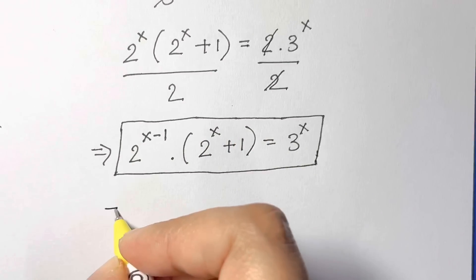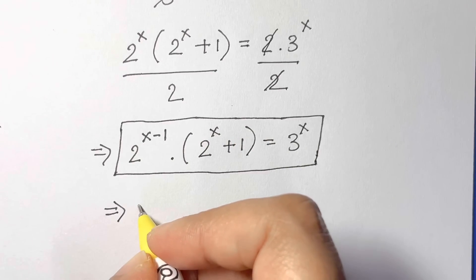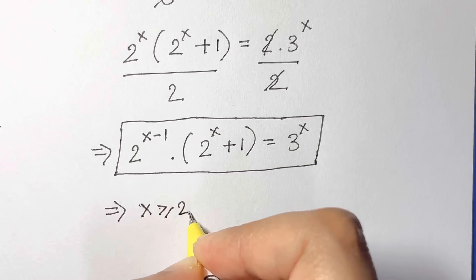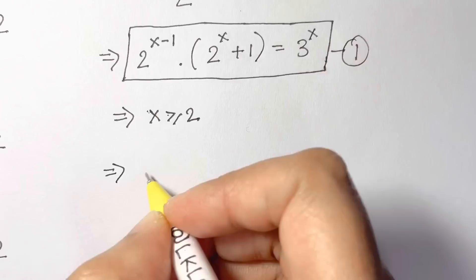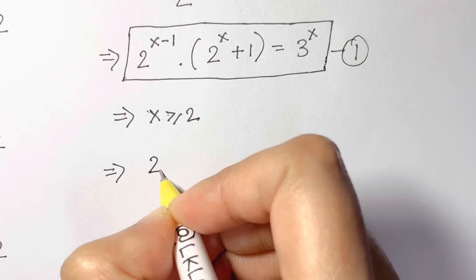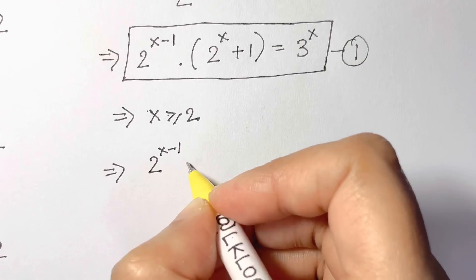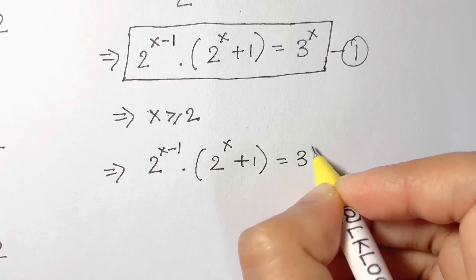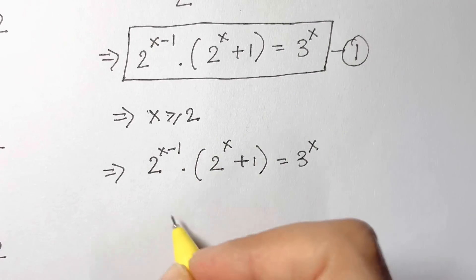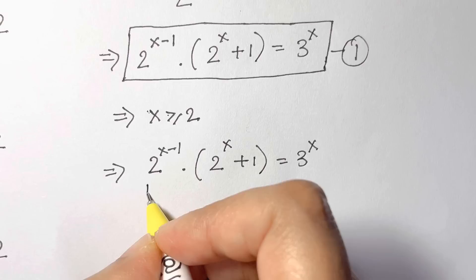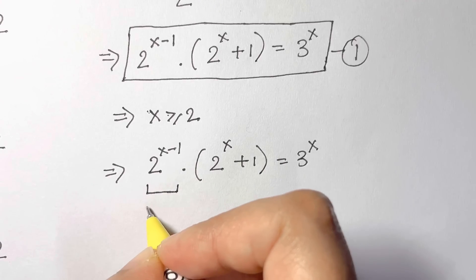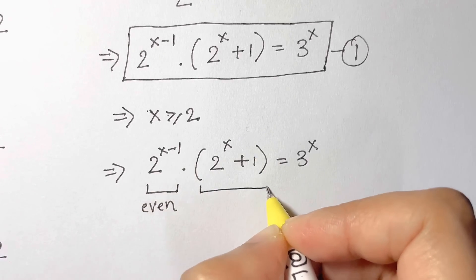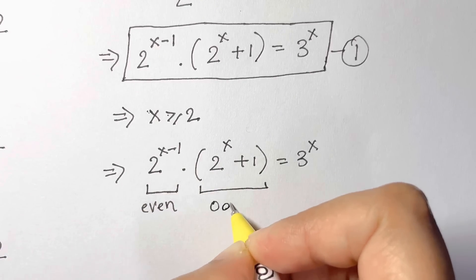Now for the case x greater than or equal to 2: from equation 1, 2 to the power of (x minus 1) times (2 to the power of x plus 1) equals 3 to the power of x. Substituting x equal to 2 or greater, we find that 2 to the power of (x minus 1) is even.